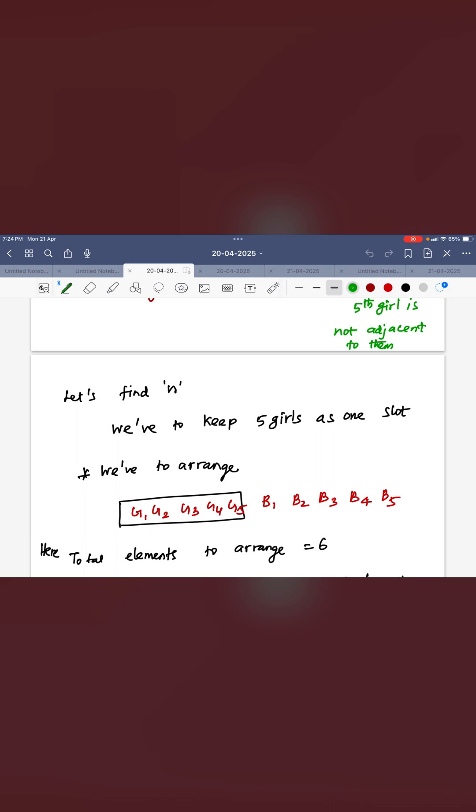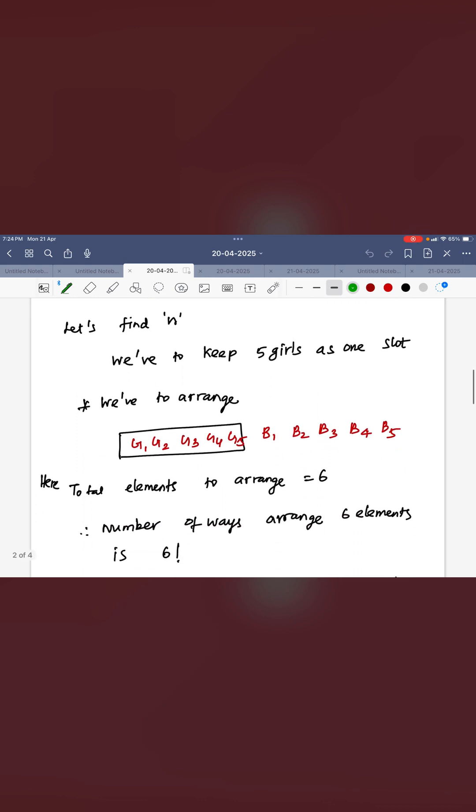So here the 5 girls are together so you can keep it one slot and you can see the 5 boys are there. So 5 boys and 5 girls in single slot there are 6 elements you have to arrange. How many ways to arrange it in the row?